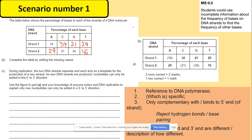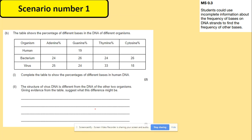The next question uses a figure of DNA and asks you to use your knowledge of enzyme action and DNA replication to explain why new nucleotides are only added in the 5' to 3' direction. This is related to DNA polymerase, which is specific only to the 5' end — the shapes of the 5' and 3' ends are different, so attachment of new nucleotides starts at the 5' end.